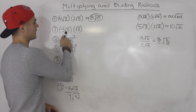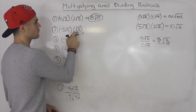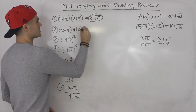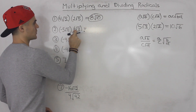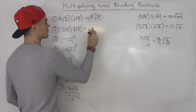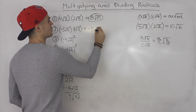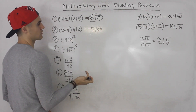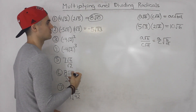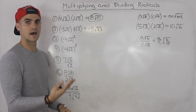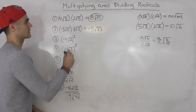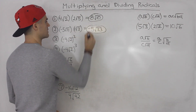We got -5√11 times √3. If you have a radical by itself, pretend there's a 1 in front. So -5 times 1 gives us -5, and then √11 times √3 gives us √33. Root 33 we can't simplify further — we can't take 33 and divide it by a perfect square like 4, 9, 16, or 25. So that is the final answer.